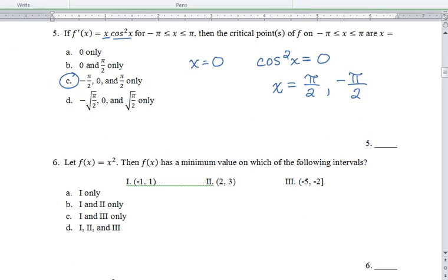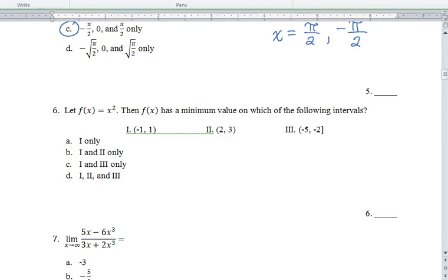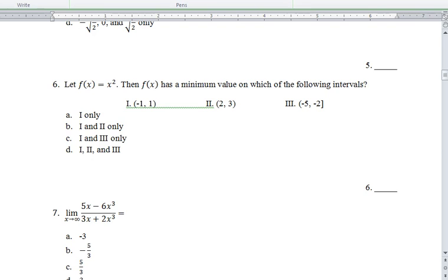Okay, number 6. I don't think anybody got number 6. Yeah, nobody got number 6. Your function is x squared. Then f of x has a minimum value on which of the following intervals? All right, so first of all, we're looking for critical numbers. So we need the derivative. f prime of x is equal to 2x. So we set that equal to 0. We get that 0 is our critical point.